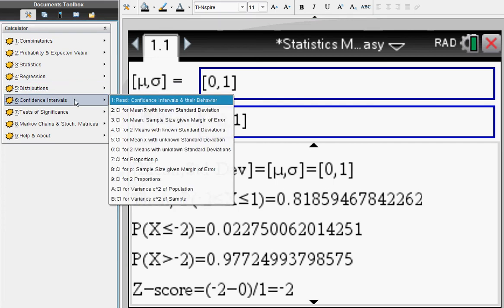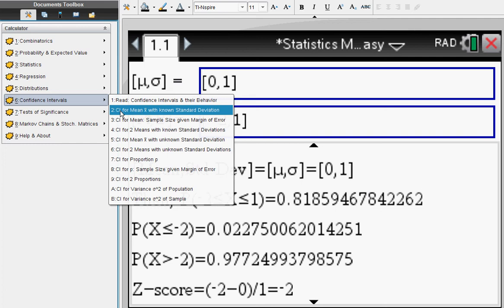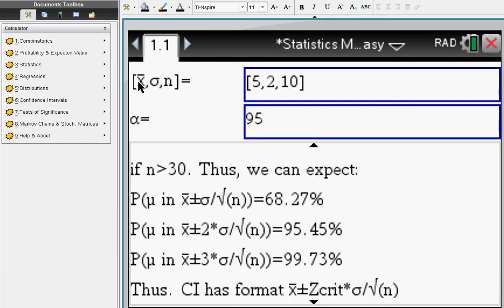Confidence intervals. Say you're looking for a confidence interval for a mean with a known standard deviation. So here's your mean, your standard deviation, and n is your sample size. And here we're using a 95 percent confidence interval.